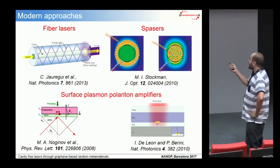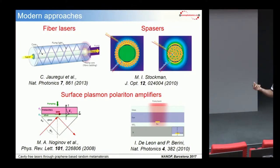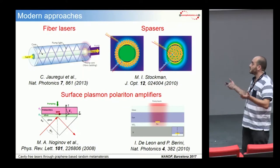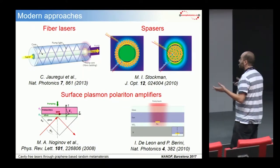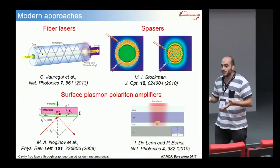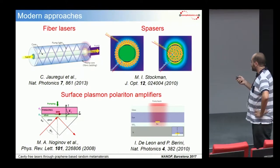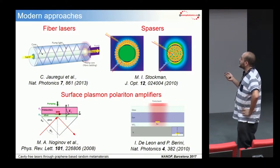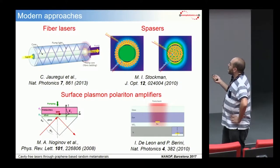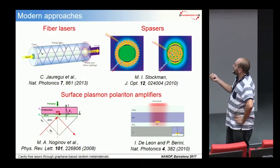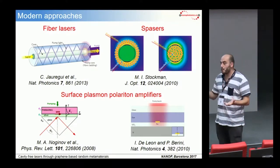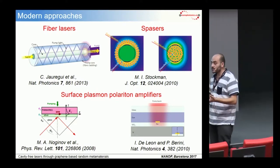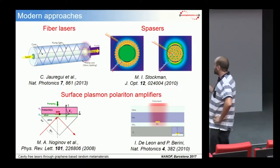The propagating counterpart of localized surface plasmons is represented by surface plasmon polaritons, which hold great promise for integrated circuits based on optical photons rather than electrons as information carriers. But surface plasmons are very lossy, so amplification schemes are used to compensate for surface plasmon polariton losses while retaining the sub-wavelength feature.